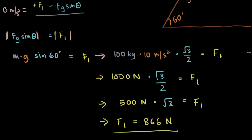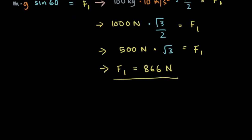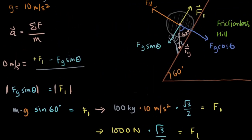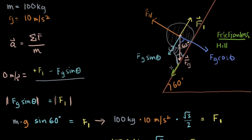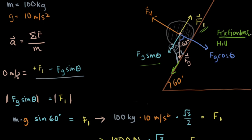So Sisyphus is pushing with 866 newtons to move the boulder upwards at constant velocity. Note this is a frictionless hill — we are not accounting for friction here. If there were friction, it would oppose the motion and add to fg·sinθ, making Sisyphus use more force than 866 N. We'll handle that in the next video.